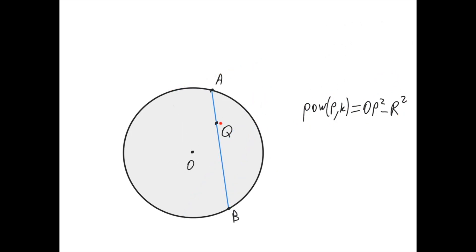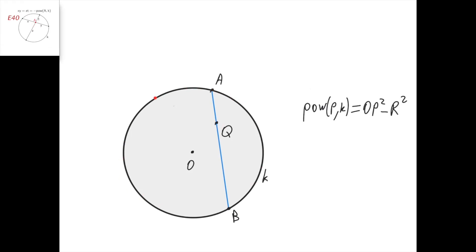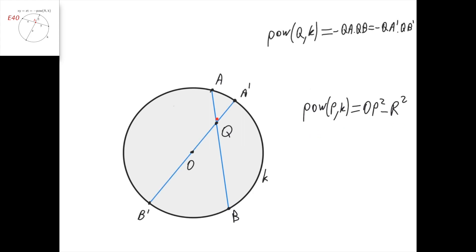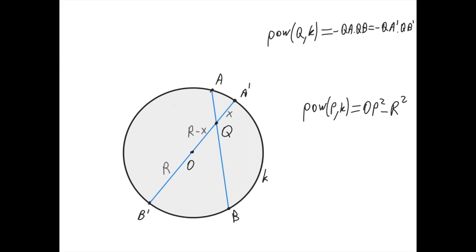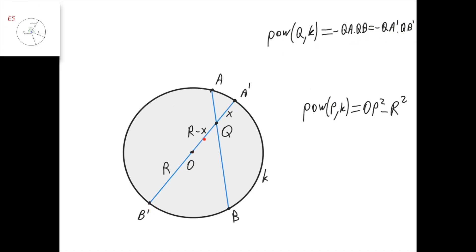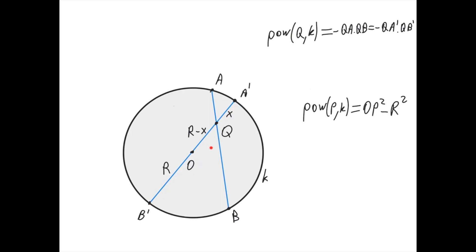Now consider a point Q inside of the circle. The power of Q with respect to circle K is defined as minus QA times QB for a chord AB passing through Q. Taking chord A'B' that passes through Q and also through center O — making it a diameter — the power of Q is minus QA' times QB'. Calling the distance QO as X, QA' equals R minus X and QB' equals R plus X, so QA' times QB' equals X times (2R minus X), giving us R minus X squared minus R squared.